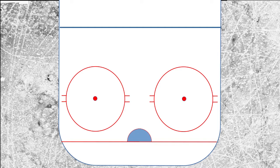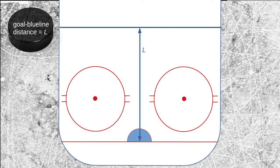That could be done from first principles using the physics of optics and lenses, but I don't have the chops for that. Instead, I'm going to use a quick and dirty method with a scale drawing of the rink as seen here.